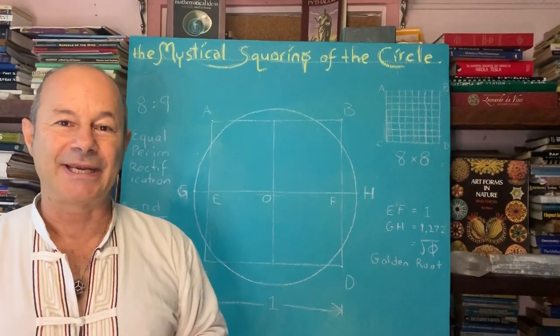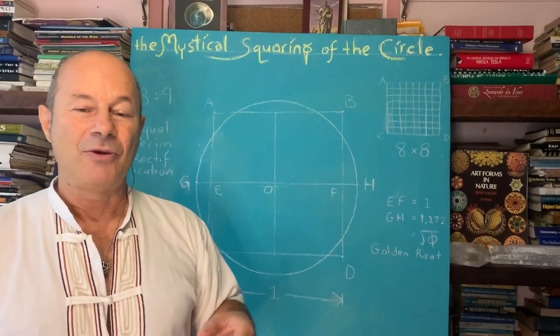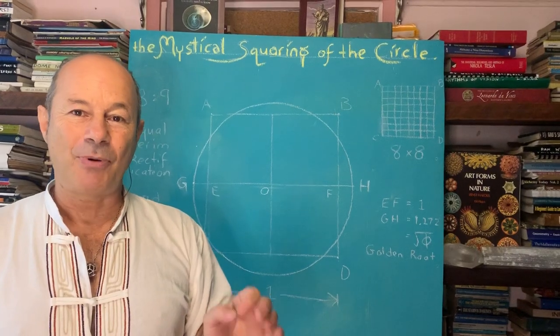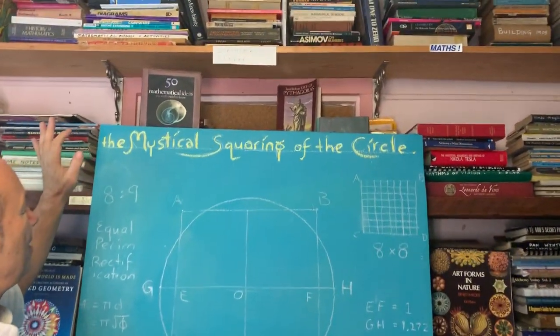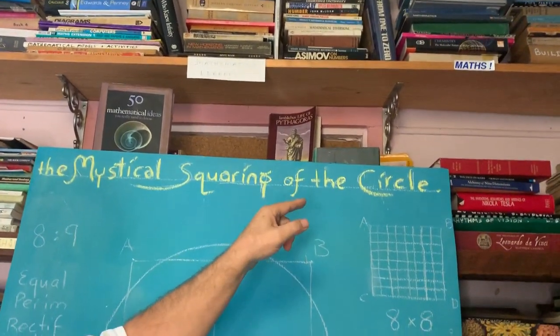That which is critical in understanding the true value of pi, which we have established as 3.144, is an understanding of something called the mystical squaring of the circle.